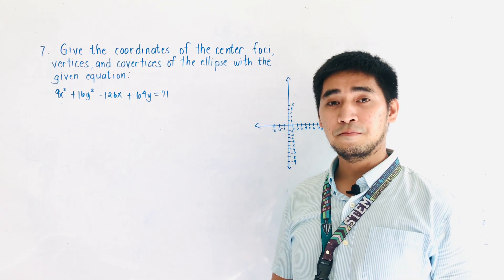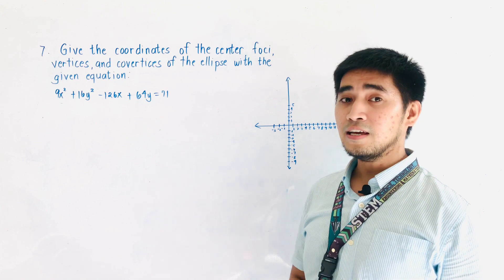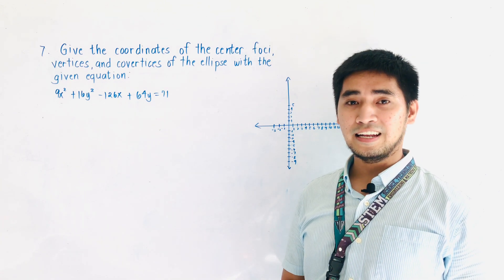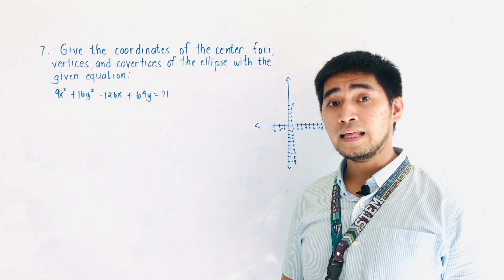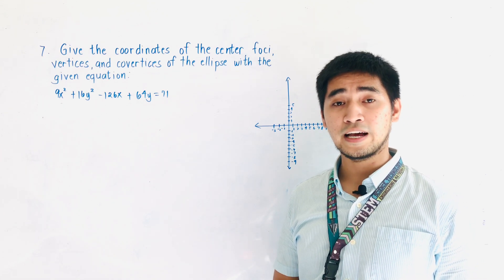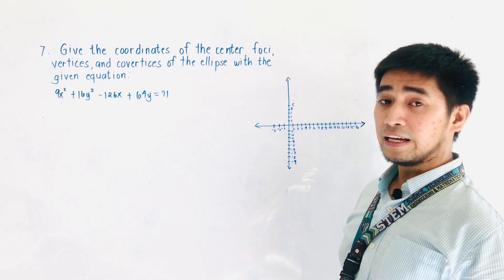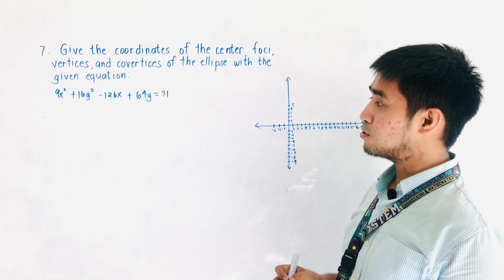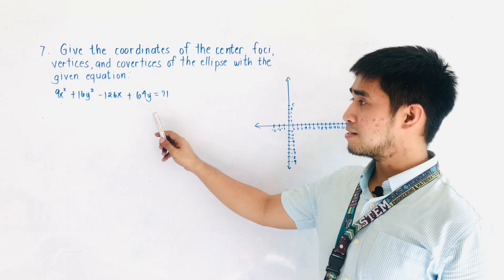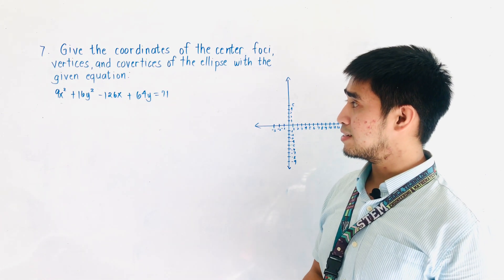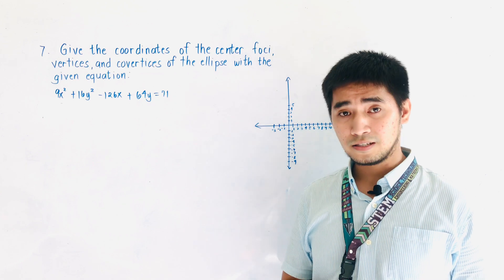Last time, we were able to get the coordinates of the foci, the vertices, and the co-vertices. For today, what if we're now given an equation and we're asked to transform this equation into the standard form and then give the coordinates of the foci, the vertices, and the co-vertices? We are given here: 9x² + 16y² - 126x + 64y = 71. In order to get the coordinates of the center, the vertices, the co-vertices, and the foci, all we have to do is to complete the square.